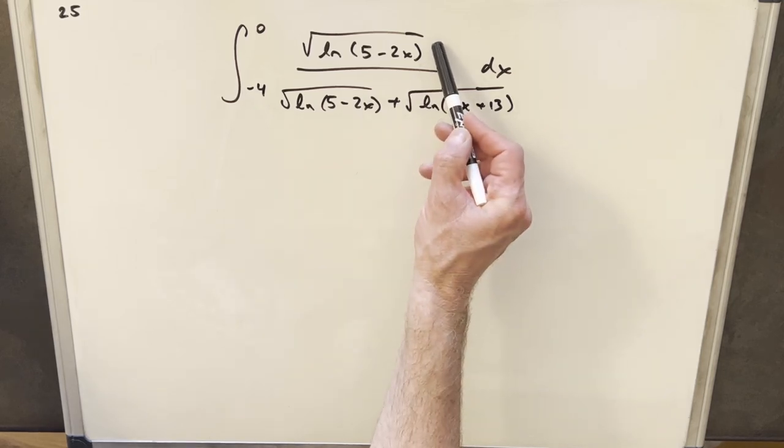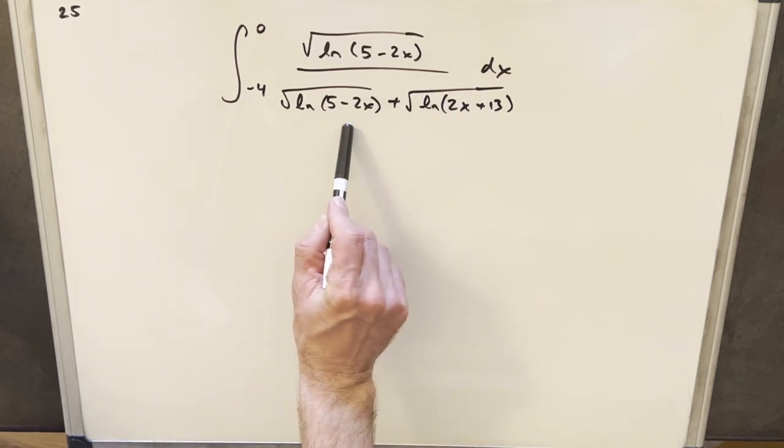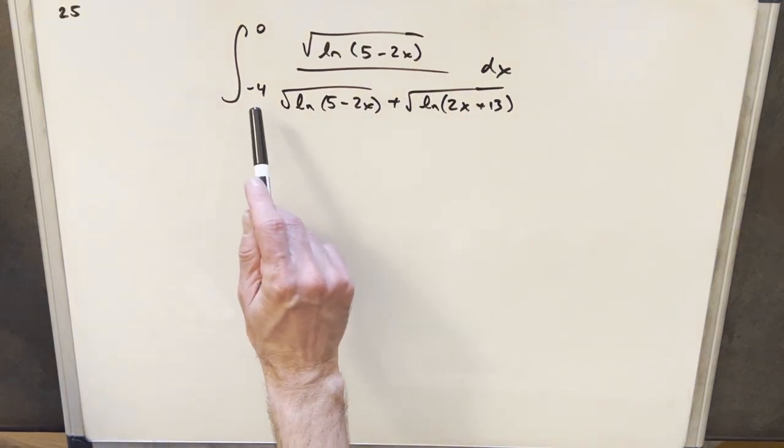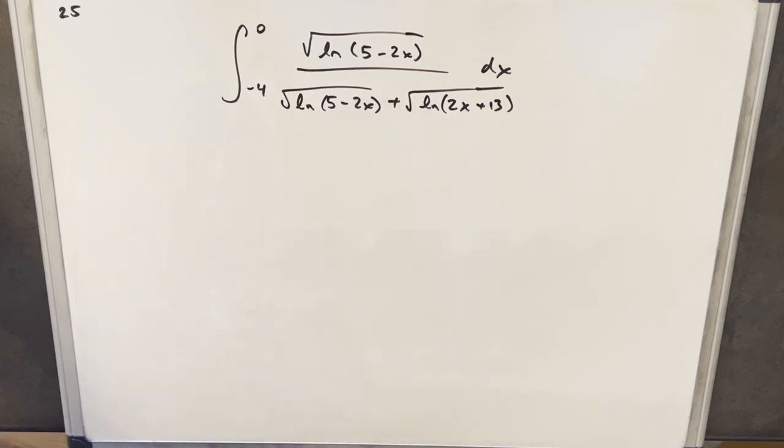The thing that sticks out is, notice that this term in the numerator is exactly the same as this. And the bounds, the way they were, it makes me think this is a good case for King's principle.